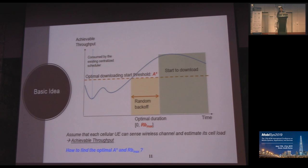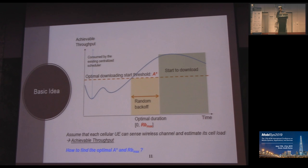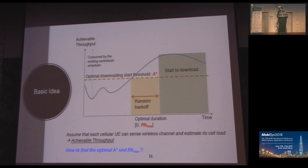The basic idea of CASEL is that the device continuously senses the cellular channel every second or at a given time interval. We define a throughput threshold that the application wants to achieve. Once the measured throughput crosses that threshold, we believe channel conditions are favorable and initiate a download. However, if multiple UEs see the same condition, they could all start downloading simultaneously. So we apply a random backoff once the condition is satisfied; after the backoff, the device re-measures the channel and checks the condition before starting the download. The two important factors here are A-star — the throughput threshold — and the random backoff.